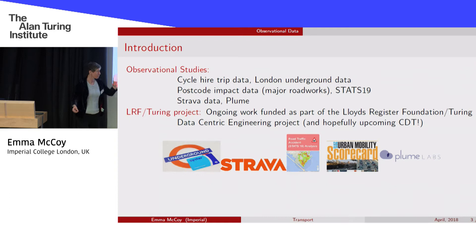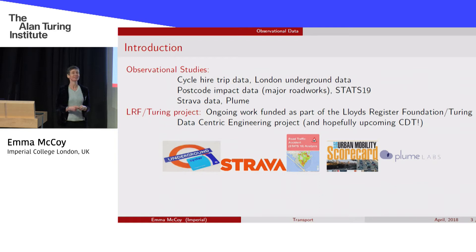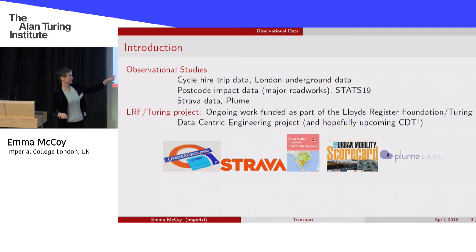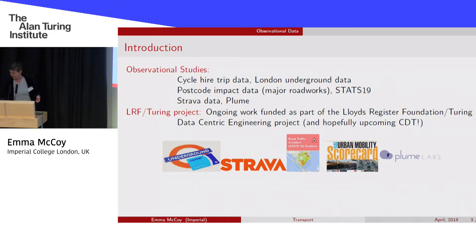I've started collaborating with someone at the Centre for Environmental Policy at Imperial who has a collaboration with a company called Plume Labs. Plume is a wearable sensor that measures air quality, so you can tell if you're in a part of London with poor air quality. This data goes up to the cloud, and we can add it to the air quality sensor data already collected by the GLA — that's one of the projects hopefully running at the Turing as well.